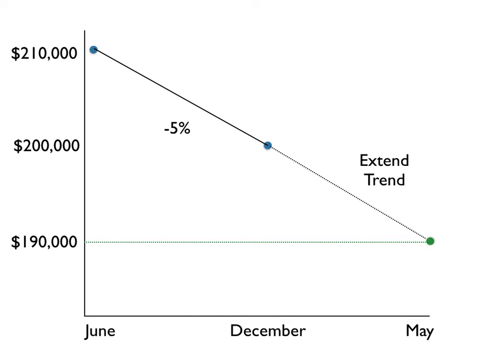If we recognize that there's actually a seasonality factor occurring here, our trend line wouldn't go down, but it would actually go back up in May — from December to May — and the value would be back at $210.